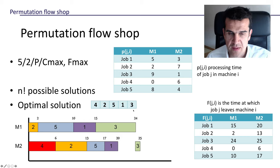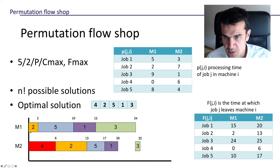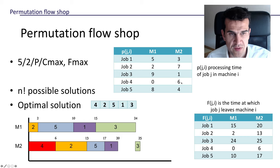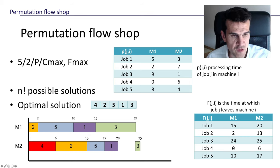For this sequence, the first job we process is job four. Job four stays at machine one for zero time units, so it leaves machine one immediately at time zero. It then goes to the second machine, where it stays for six time units, finishing at time six. So job four leaves machine one at time zero and leaves machine two at time six.